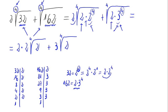So 2 times 2 is 4 times the 4th root of 2, plus 3 times the 4th root of 2.